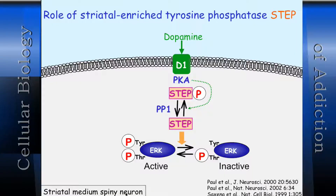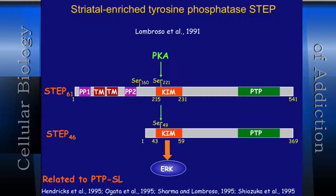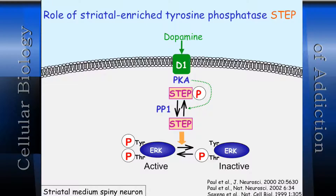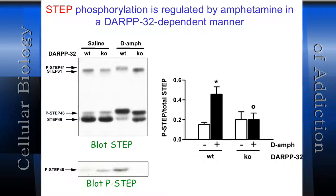What we knew was that STEP can interact with ERK, dephosphorylate this tyrosine, and cause inactivation. But we also discovered that the PKA site on STEP was also a site for protein phosphatase 1 — the enzyme regulated by DARPP-32. So PKA could phosphorylate STEP, or PP1 could reverse this, allowing STEP to cycle between active and inactive forms.